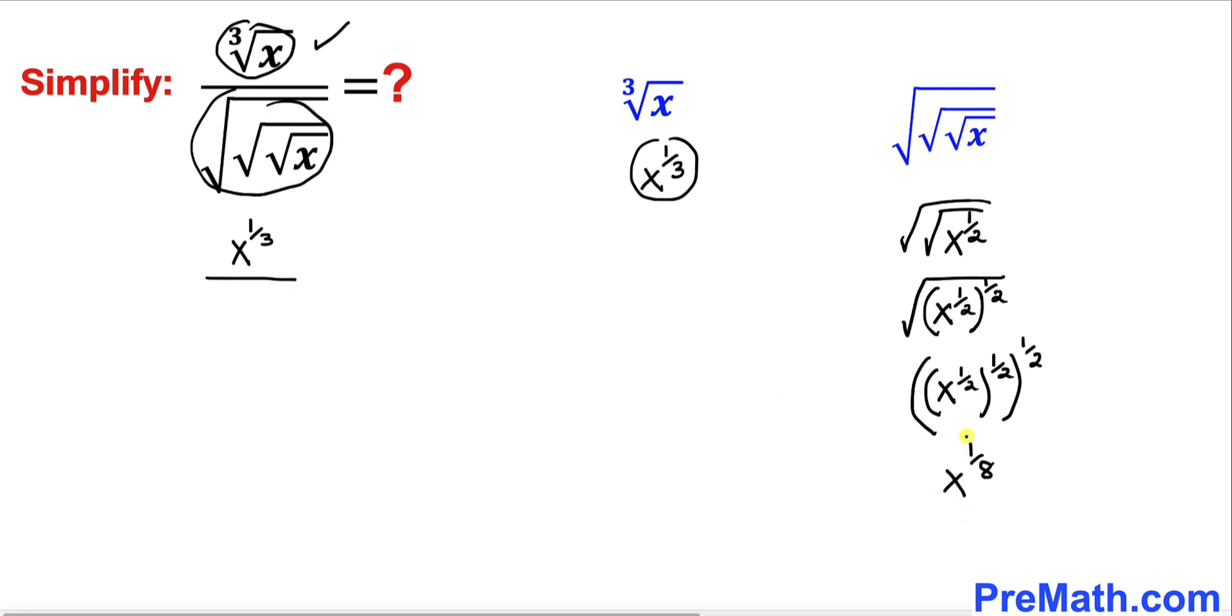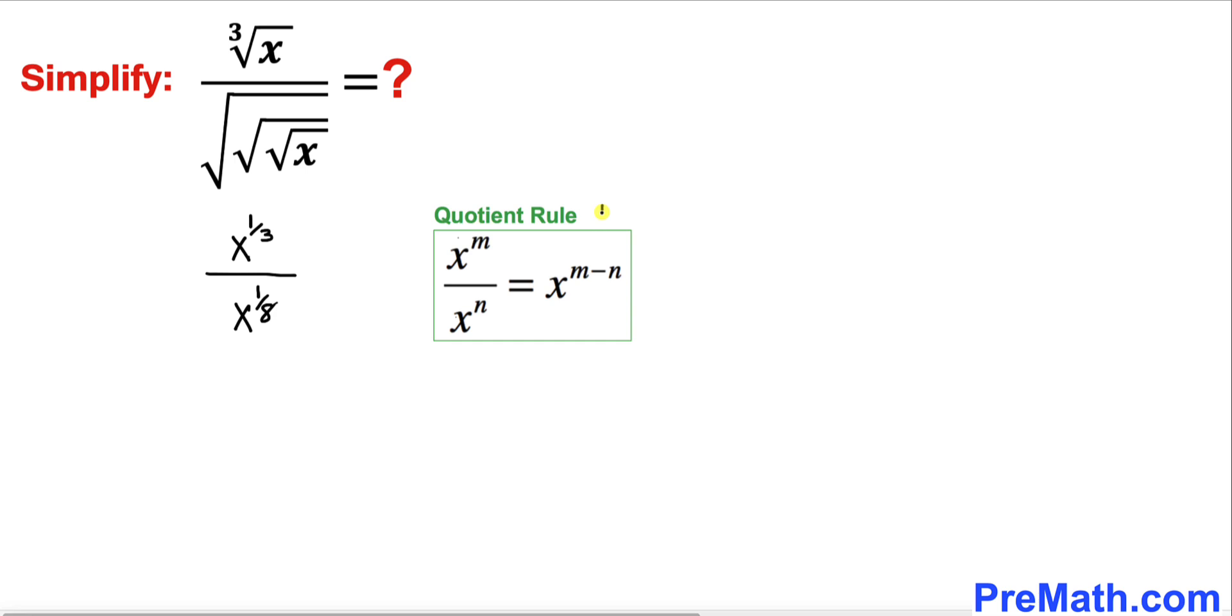Now let's recall the quotient rule. According to this rule we can write this as x to the power of 1 divided by 3 minus 1 divided by 8. Let's focus on the exponent. We are going to simplify this using the cross-multiplication method. Cross multiply: 1 times 8 is 8.